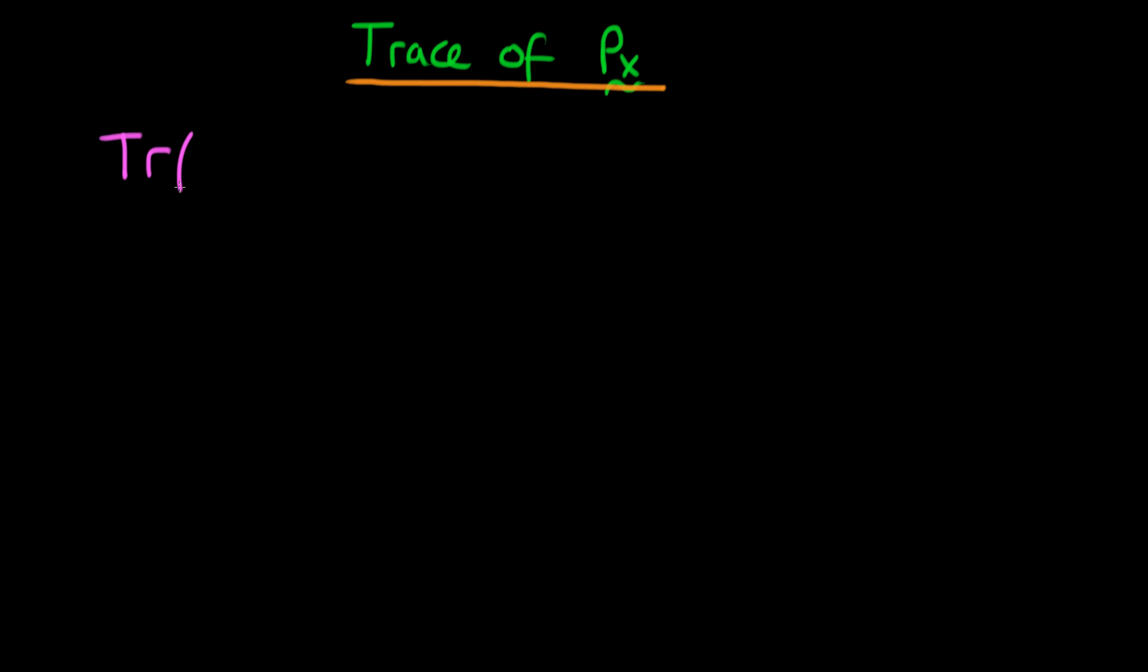So, in the material thus far, we went on to talk about how the trace of Px is necessarily equal to P, the number of independent variables. And I wanted to explain why this is necessarily the case.